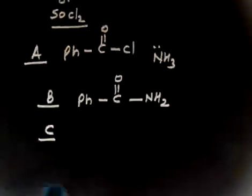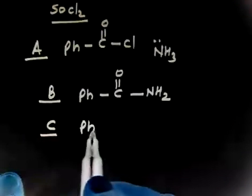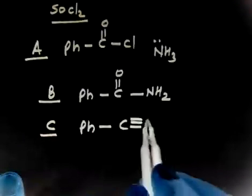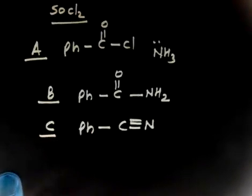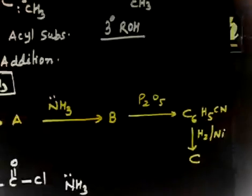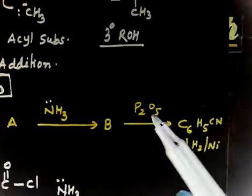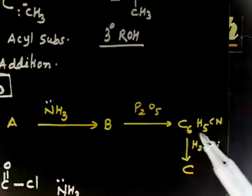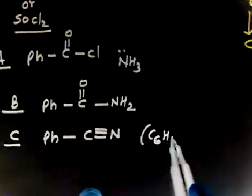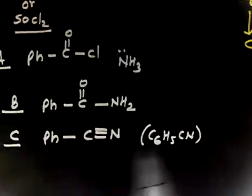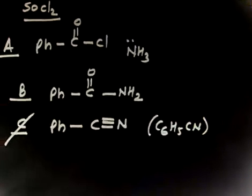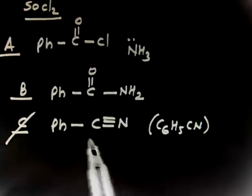P2O5 acts as a dehydrating agent. We will lose H2O, so we will have Ph-C≡N. This is given to you. This is basically not C. You see here P2O5, the molecular formula is C6H5CN. This molecular formula C6H5CN is not C.